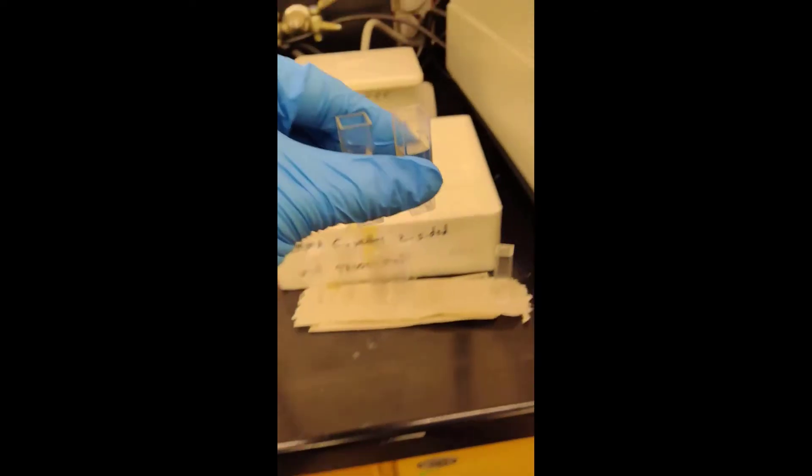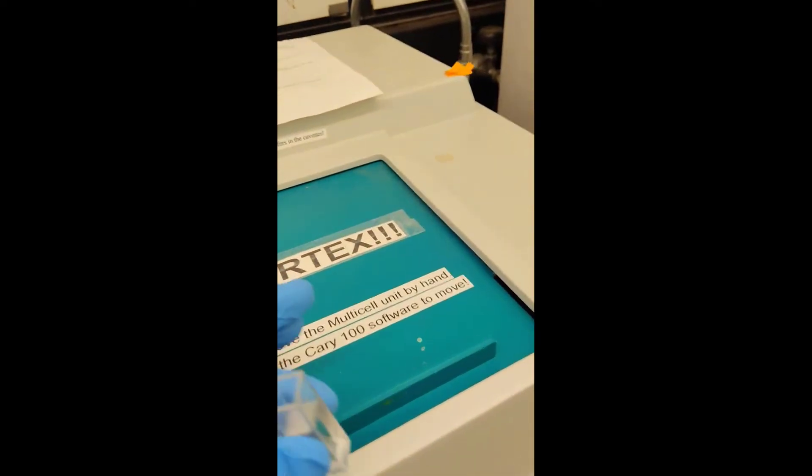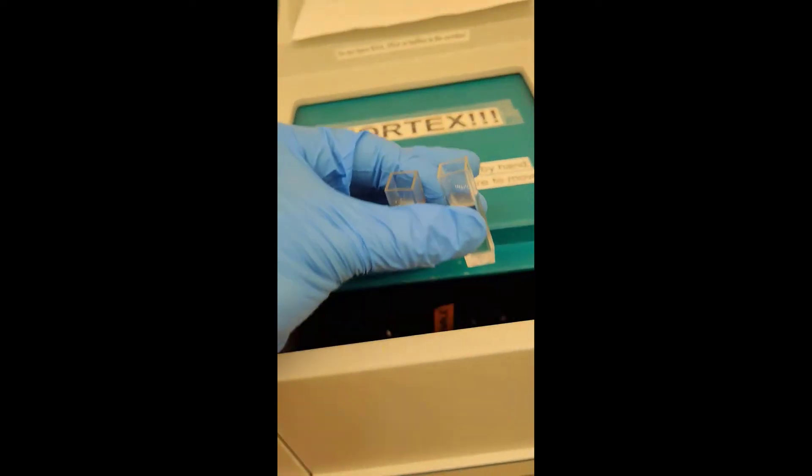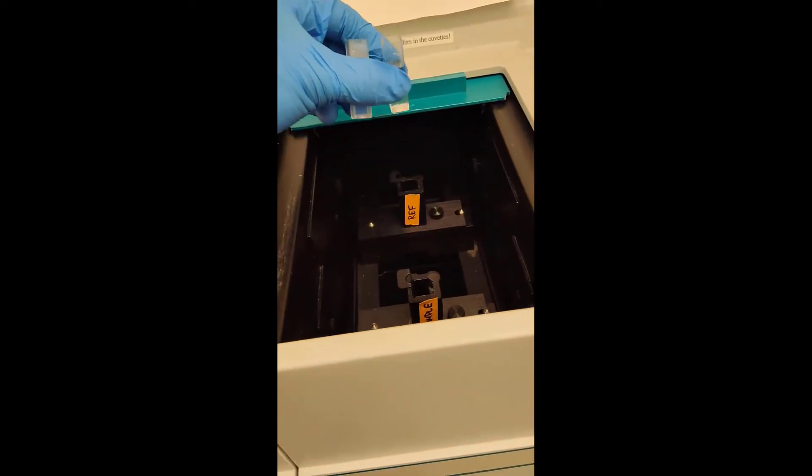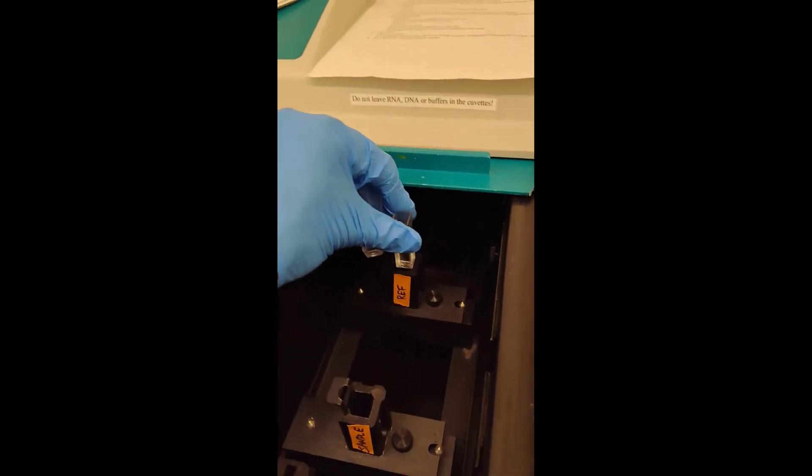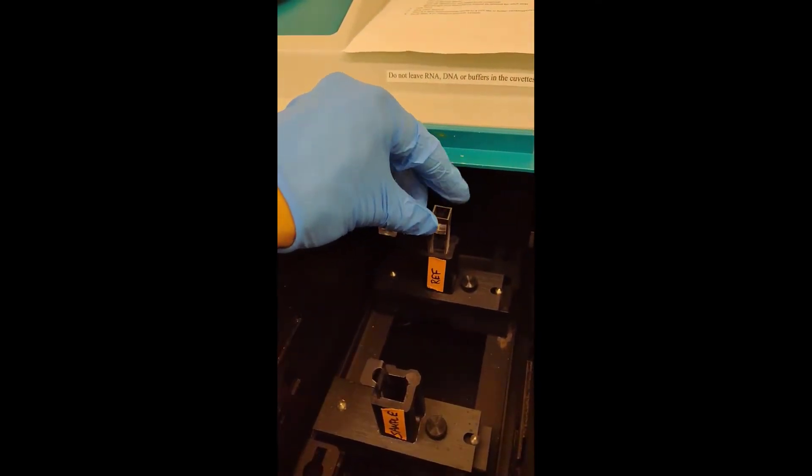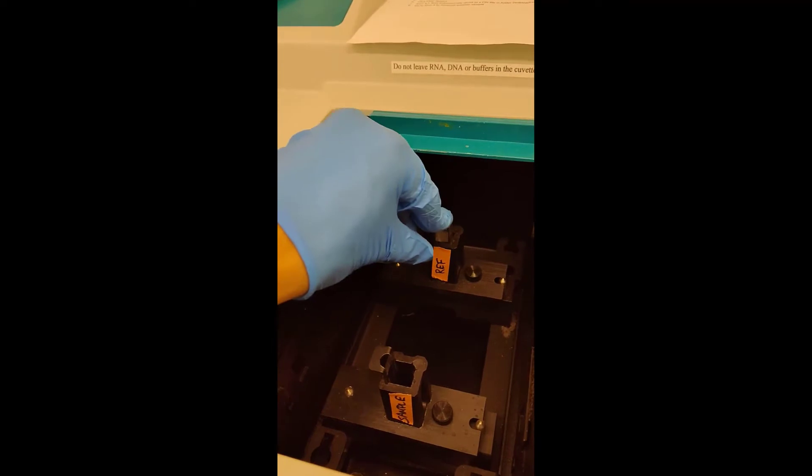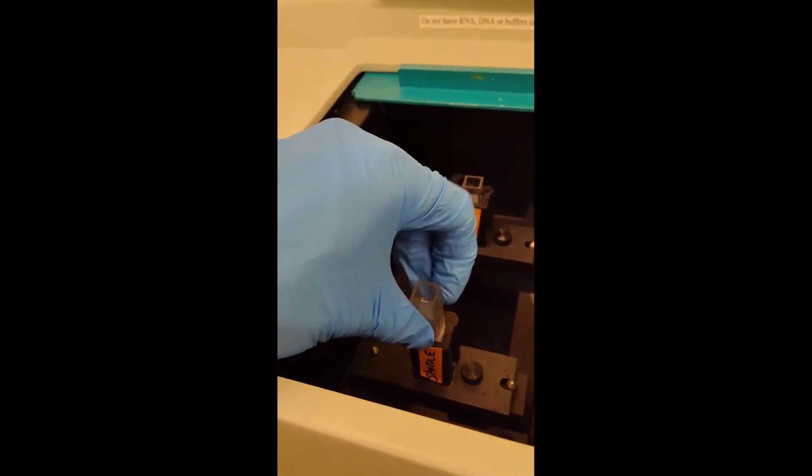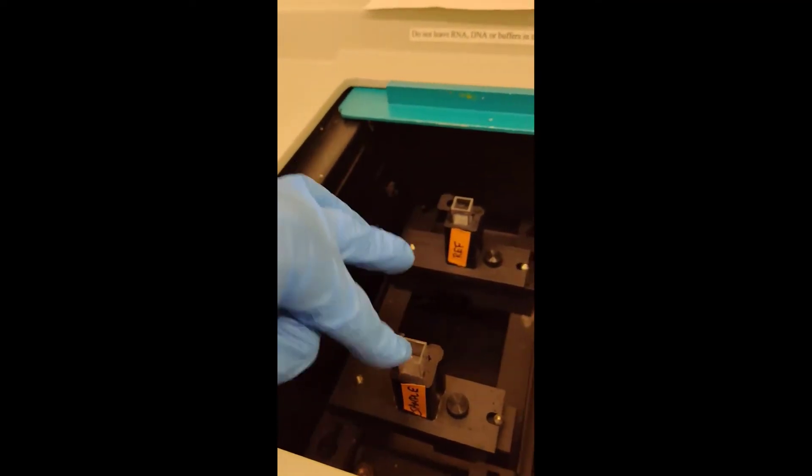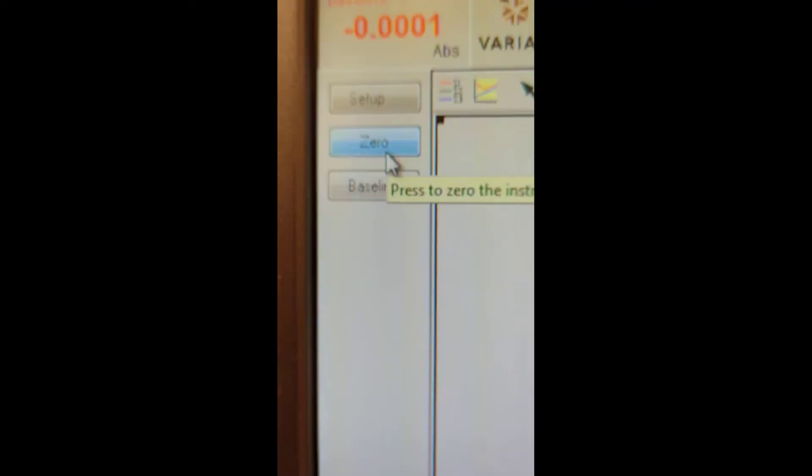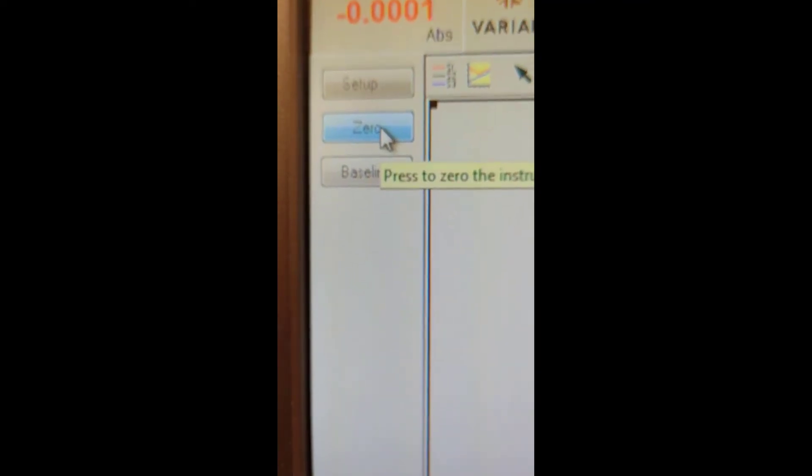Once that's taken care of, I'm going to load both of them into the two different cell compartments. I'll put one in the reference compartment, making sure that the transparent sides are facing horizontal to me, such that the light can pass through. Same thing with the sample compartment. Close that up, and then I can go ahead and zero the instrument.